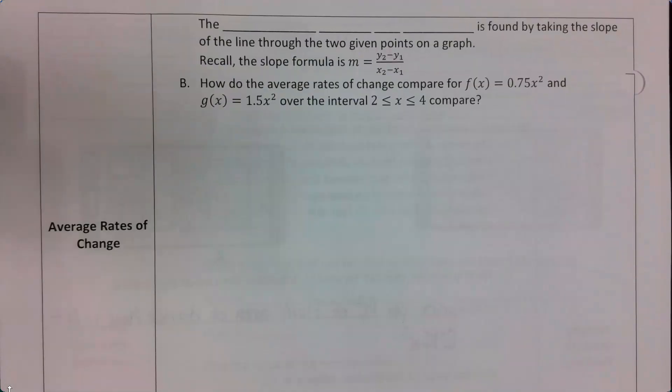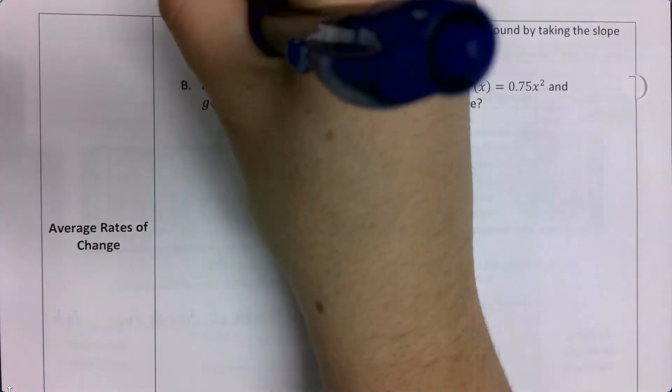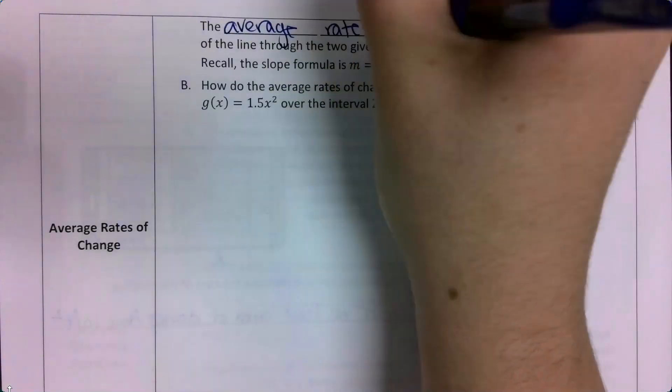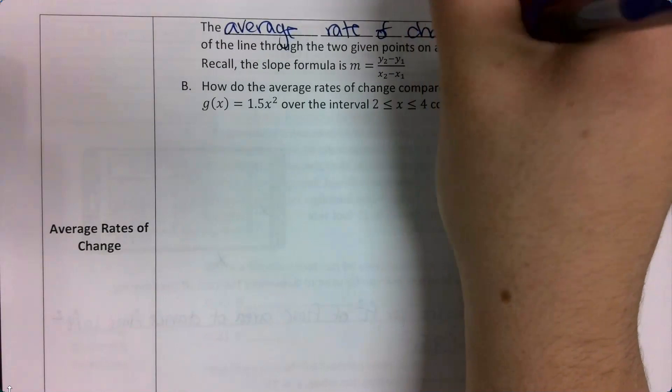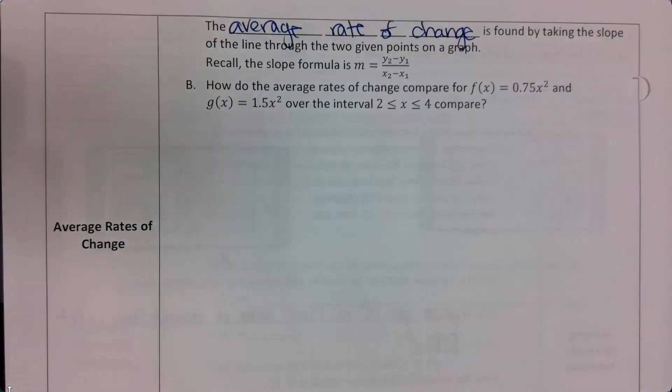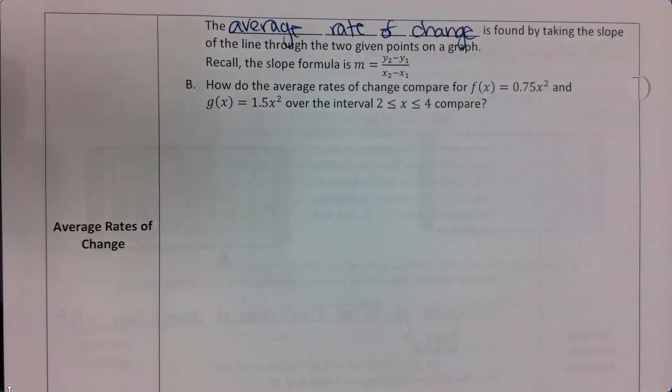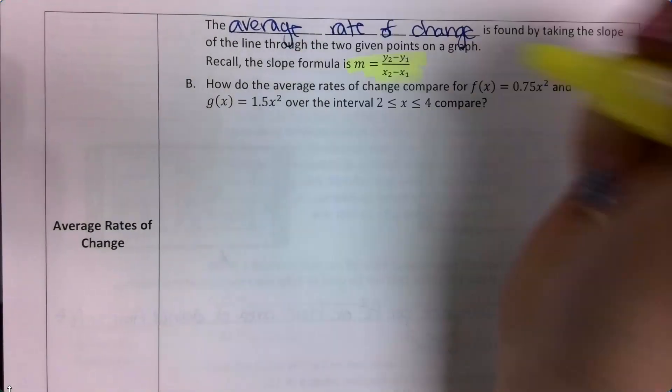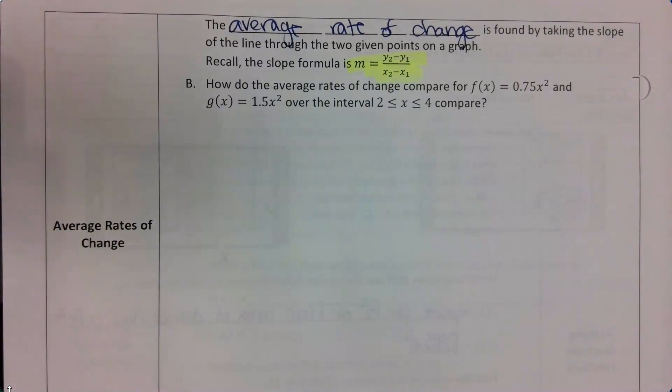So the next thing we're going to talk about is average rate of change. The average rate of change is found by taking the slope of a line through two given points on a graph. Remember, the slope formula is m equals y sub 2 minus y sub 1 over x sub 2 minus x sub 1.